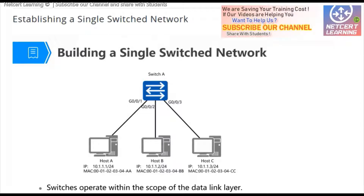Let's look at the topology. This is the simplest network that contains only one switch. One switch constructs a LAN. There are three hosts connected to the switch via interfaces gigabit 0/0/1, gigabit 0/0/2, and gigabit 0/0/3. Each host has an IP address and a MAC address. The IP address is the layer 3 address and the MAC address is the layer 2 address. Since the switch is in one network, all IP addresses must be in the same network.